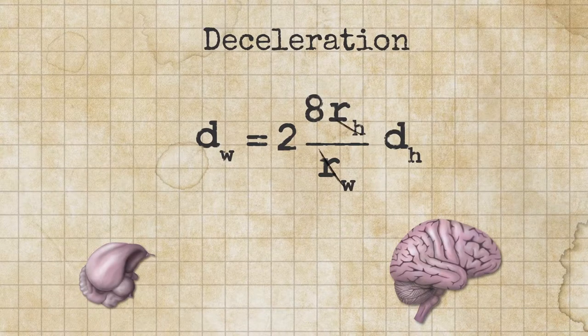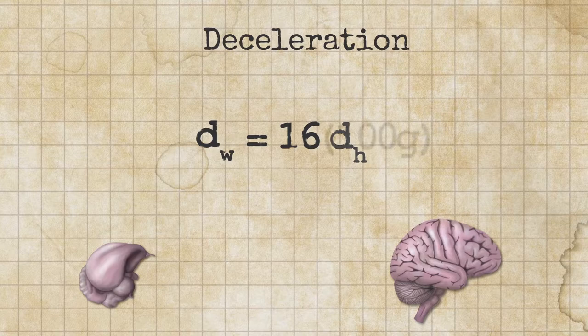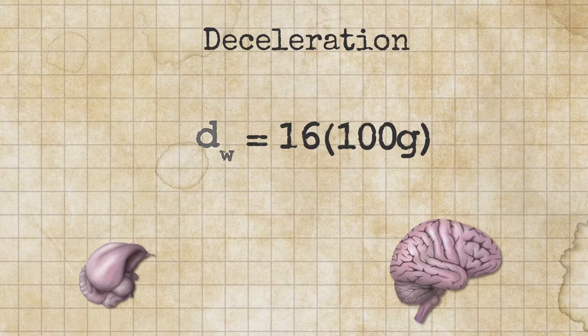So our equation says that the woodpecker brain can tolerate a deceleration 16 times that of the human brain. So this is kind of interesting. We said that the human brain could tolerate 100 G. So our equation so far says that the woodpecker could tolerate something like 1,600 G.